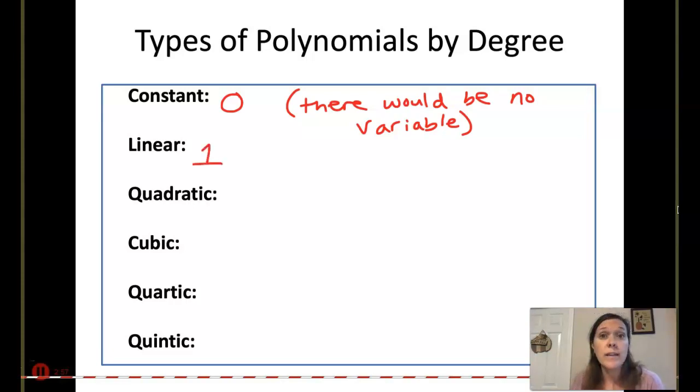If your degree is 1, which means you probably just have like an x, or y, or z, because usually 1s are invisible, we don't put them there. Then it's linear. 2 is quadratic. 3 is cubic. 4 is quartic. And 5 is quintic.